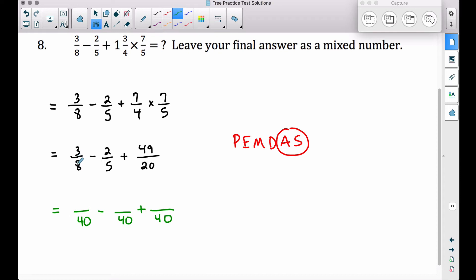So going through each one of these individually, eight times five will give us forty, so three times five is going to give us fifteen. Therefore, three eighths is the same thing as fifteen over forty. Five times eight gives you forty. Two times eight is going to give you sixteen. Therefore, two-fifths is the same thing as sixteen over forty. Last but not least, twenty times two gives us forty. Forty-nine times two gives us ninety-eight.